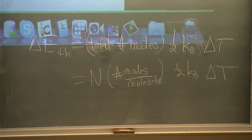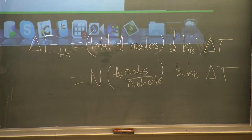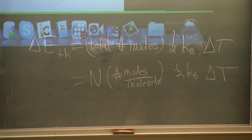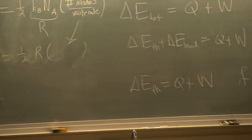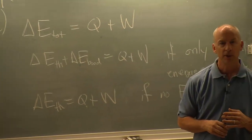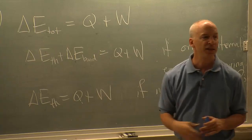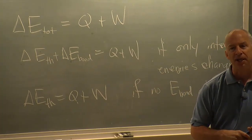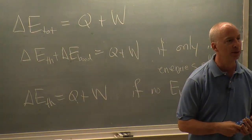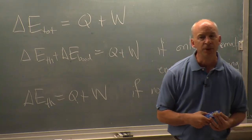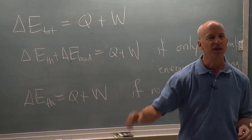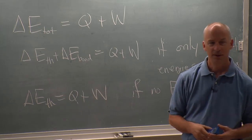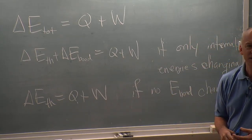We can go right back to the beginning of the quarter. How do you change the energy of something? Well, you transfer energy. So Q and W — heat and work — are energy transfers. Heat is an energy transfer from something hot to something cold, from something at a high temperature to something at a low temperature. And work is every other energy transfer — everything that isn't heat.